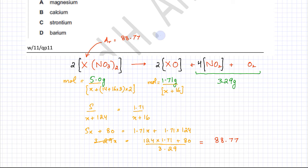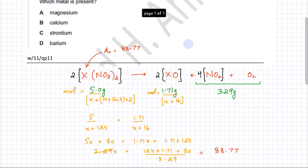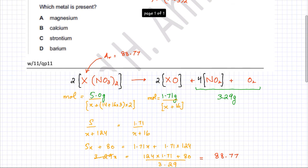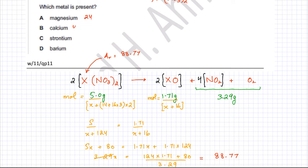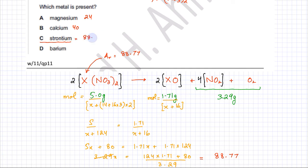Now comparing X ≈ 88.77 to the group 2 elements: magnesium has Ar = 24, calcium ≈ 40, and strontium ≈ 88. Strontium is the closest match, so option C is the correct answer — the metal is strontium, whose Ar matches the calculated value of 88.77.